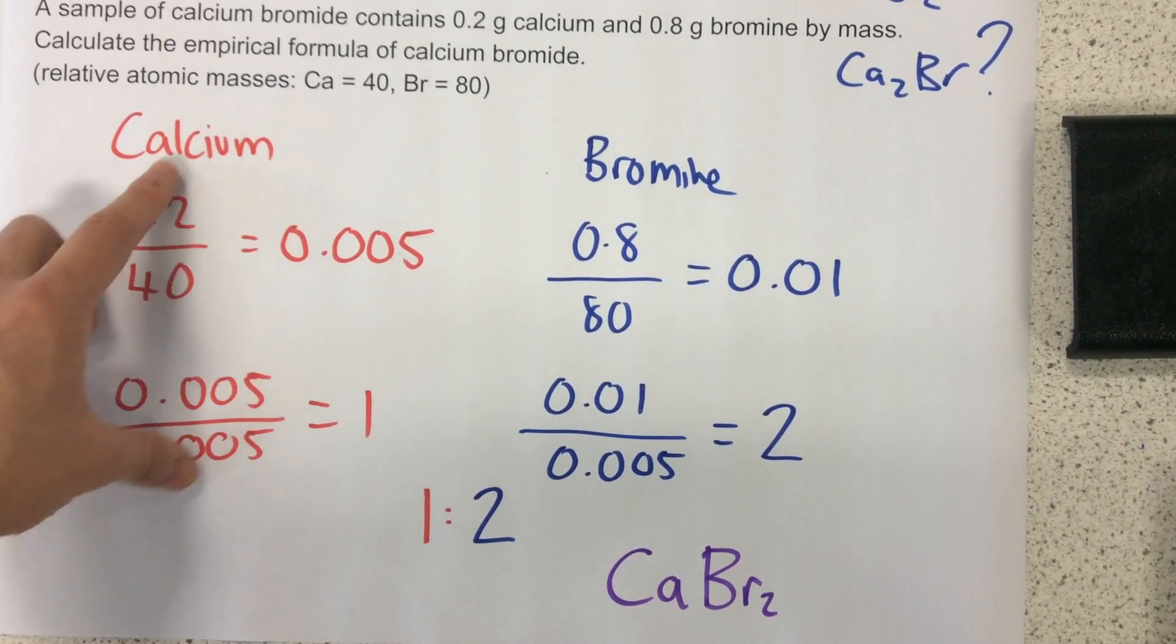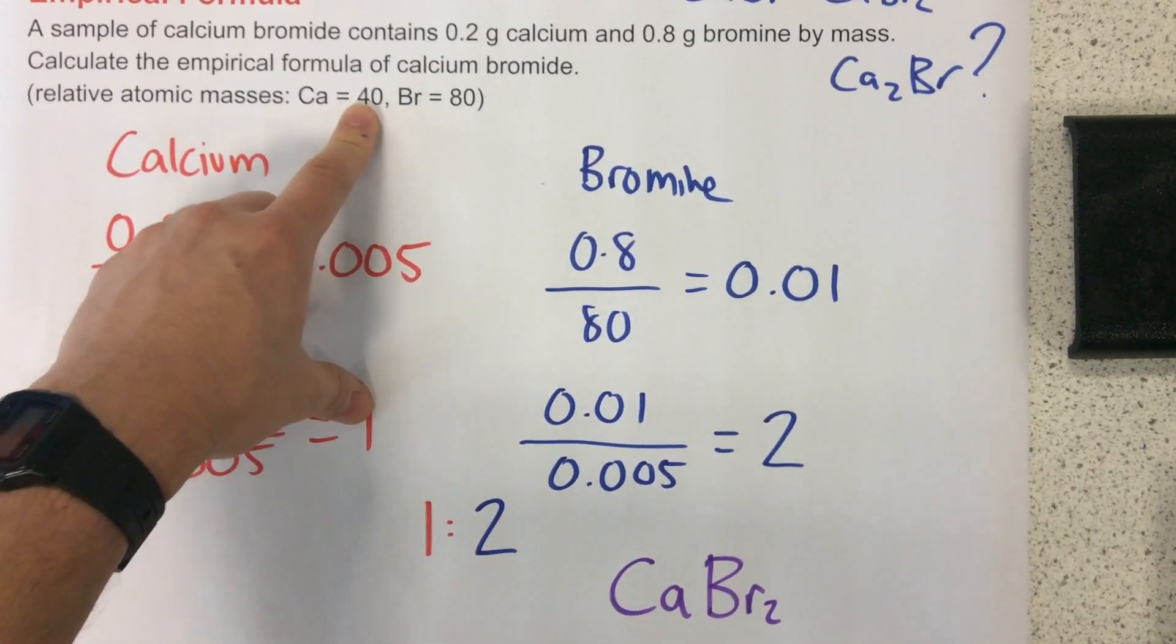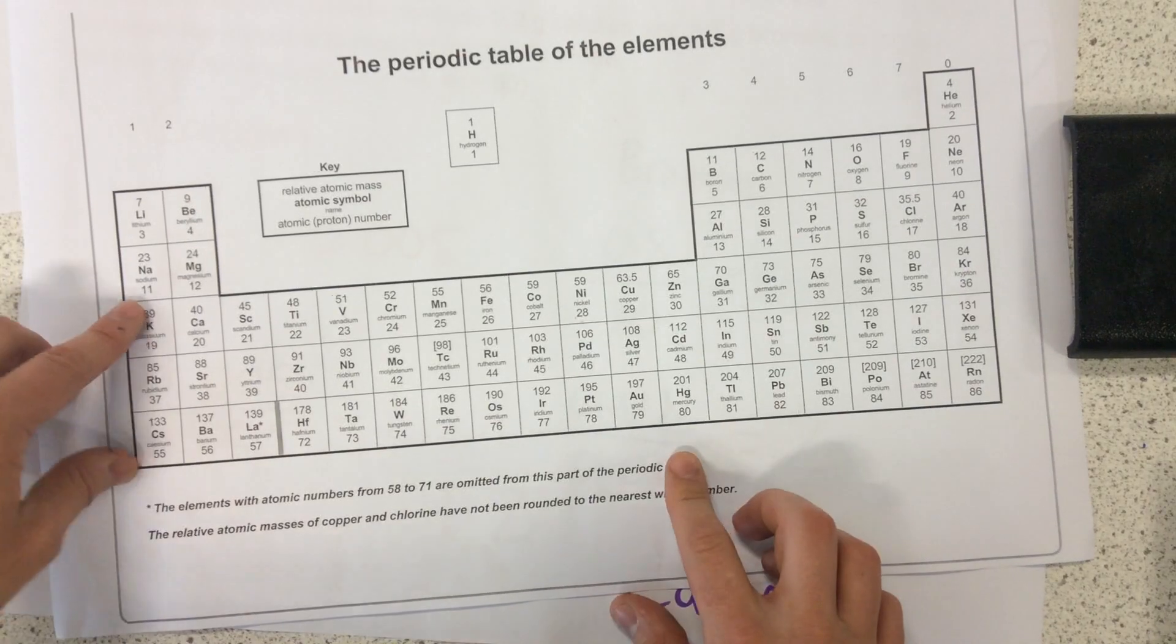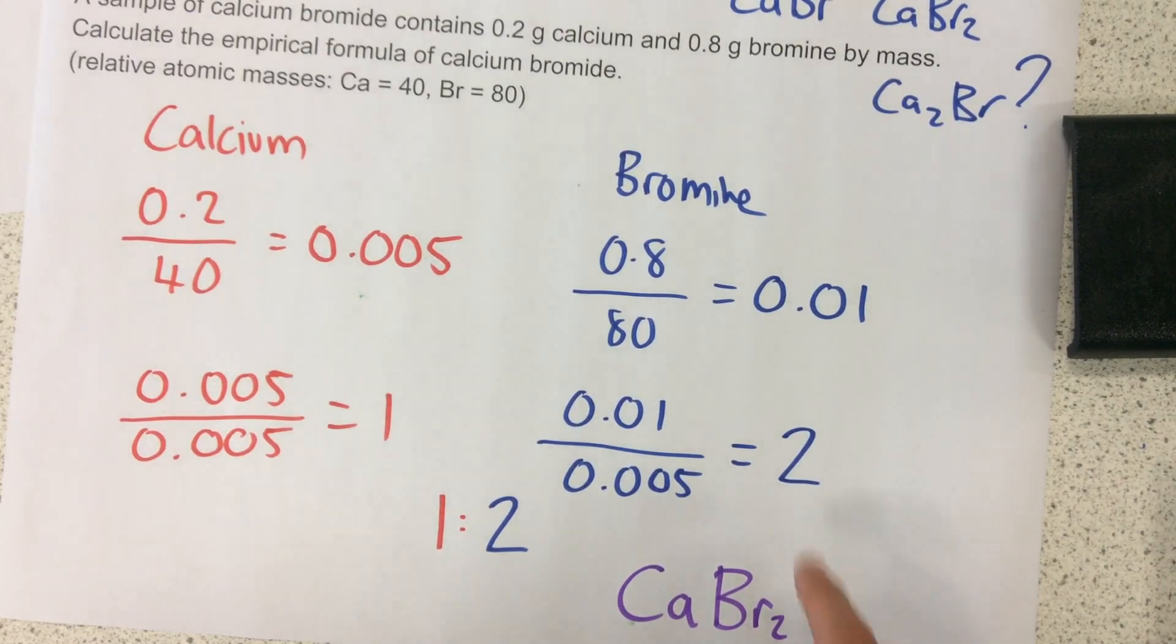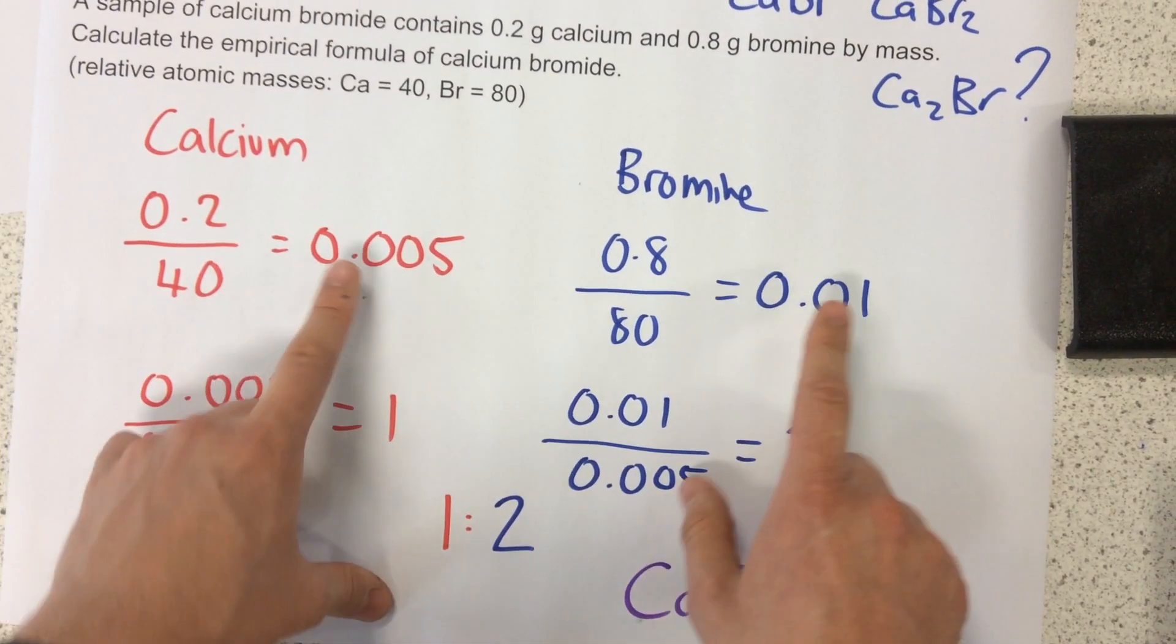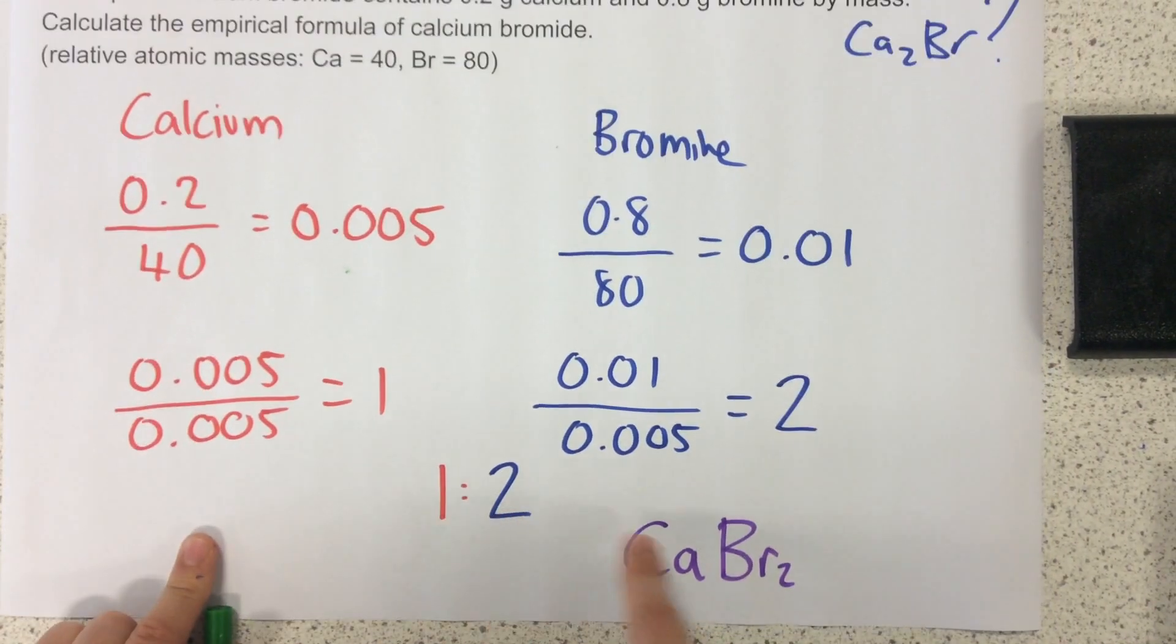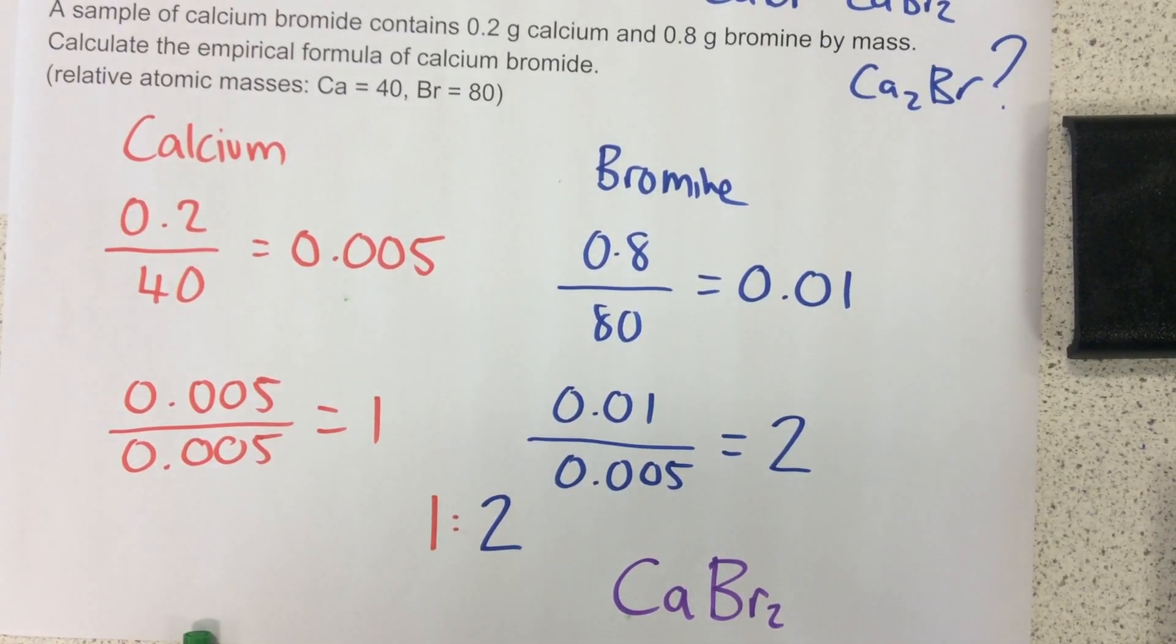So my steps: first of all, divide my mass by my relative atomic mass. If they don't give you this, remember, you could find these on the periodic tables, the bigger number of the atom. Then what you need to do, once you've done that for both of them, you divide both of these by the smaller number of the two. That should give you a ratio. And then you just need to write out the empirical formula like that. OK, thank you very much.